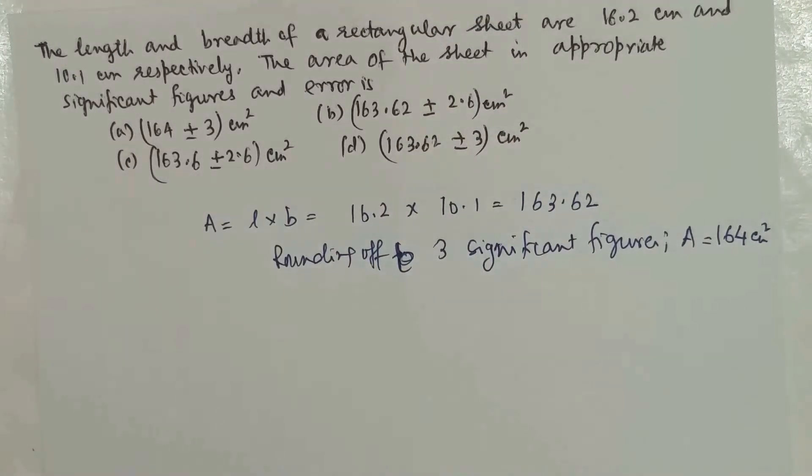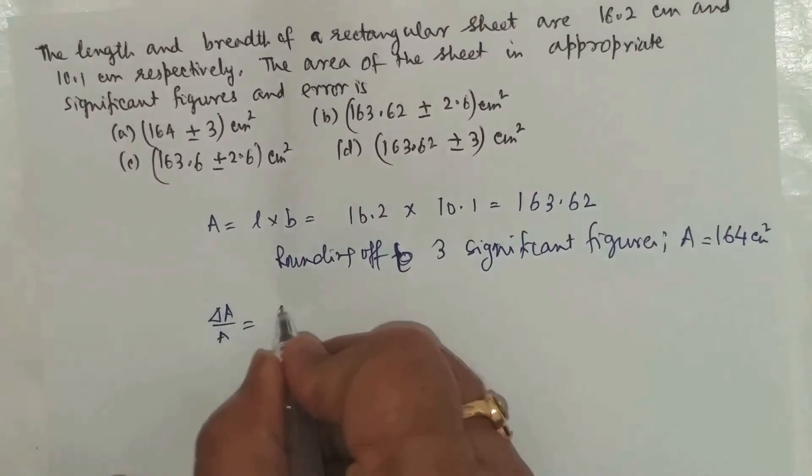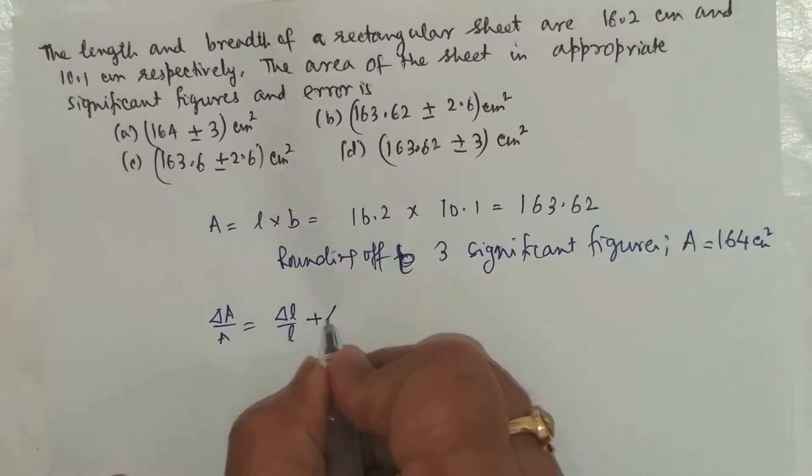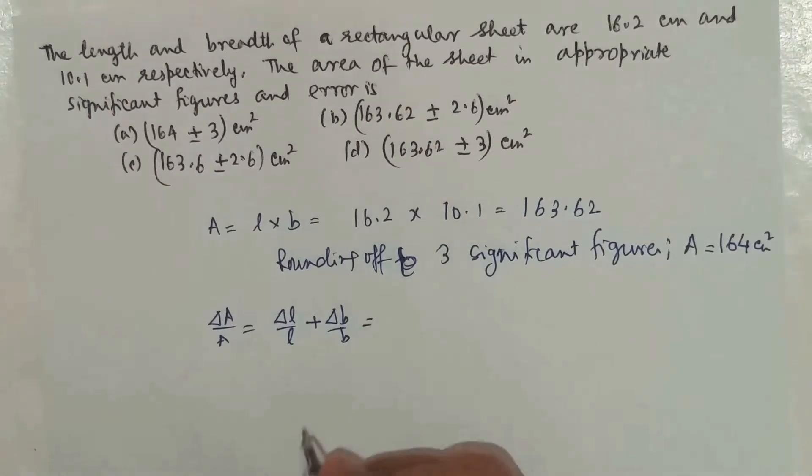Now for the errors. What is ΔA/A? ΔA/A equals ΔL/L plus ΔB/B. If required we could multiply by 100, but there's no requirement for percentage error.